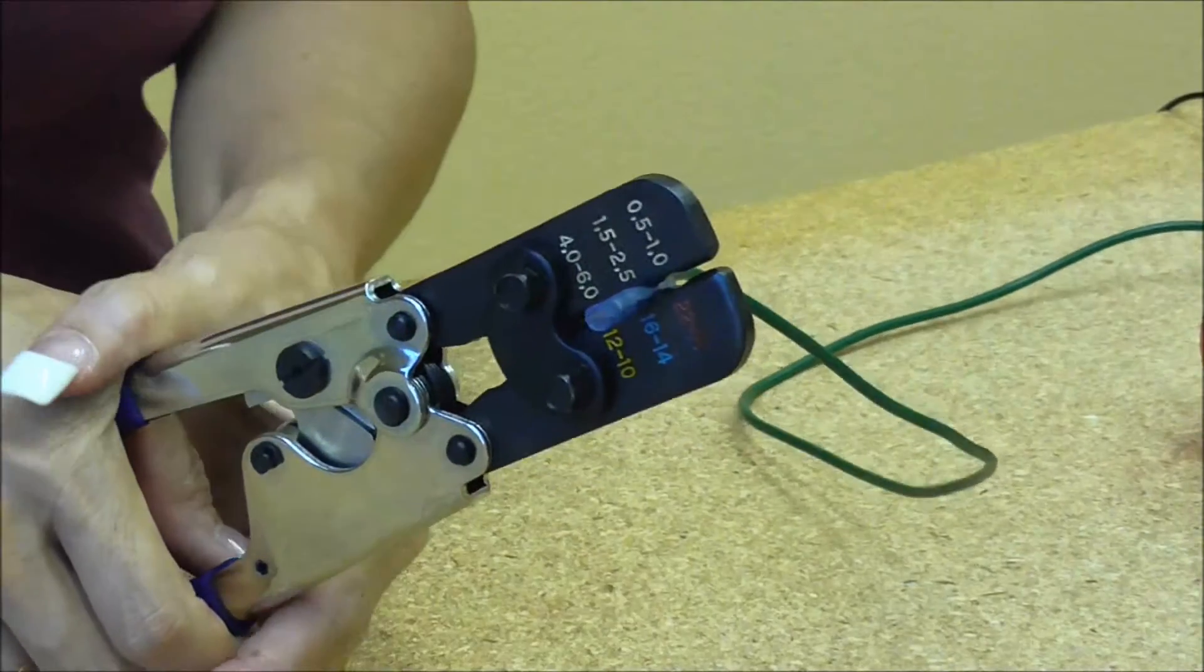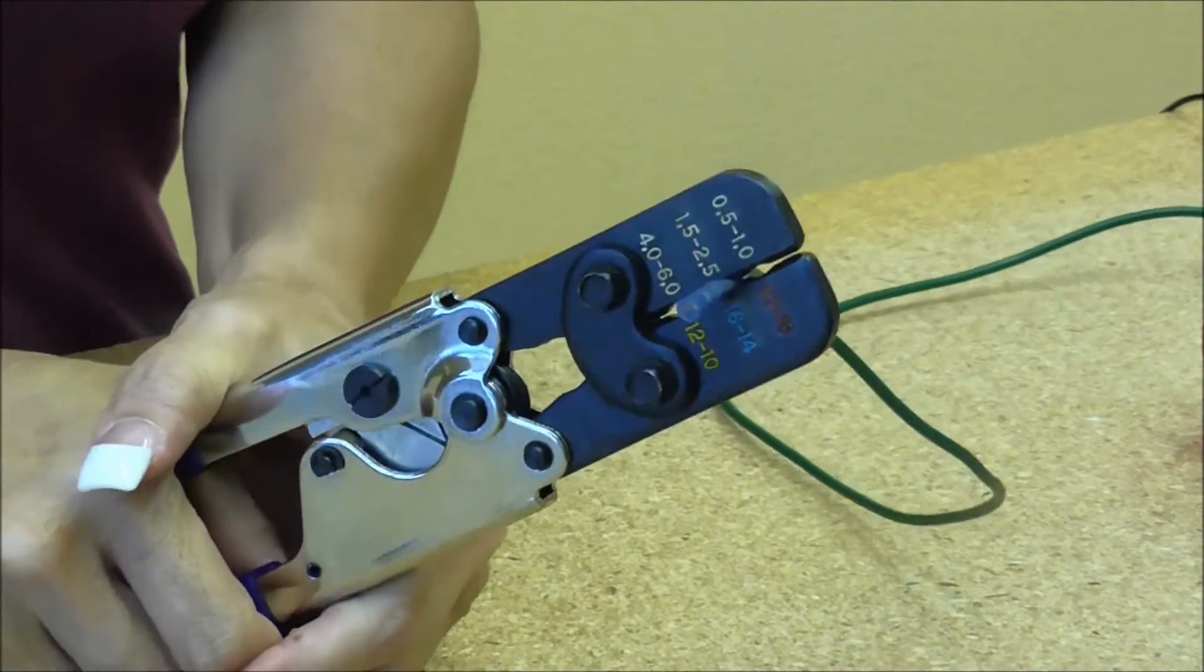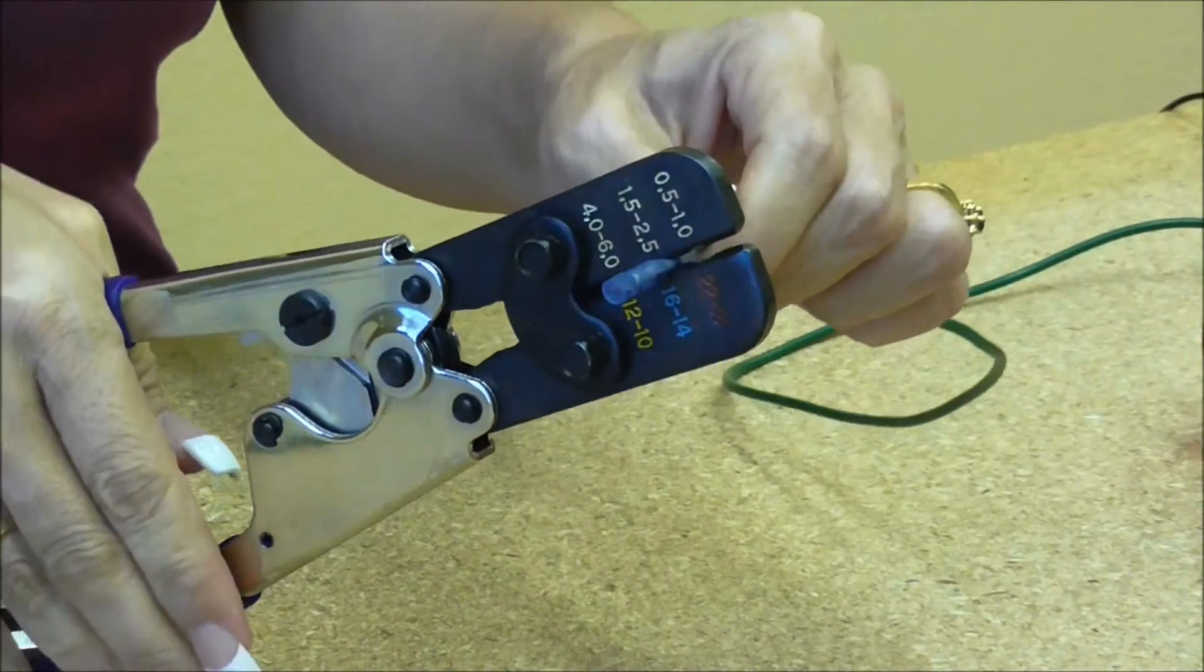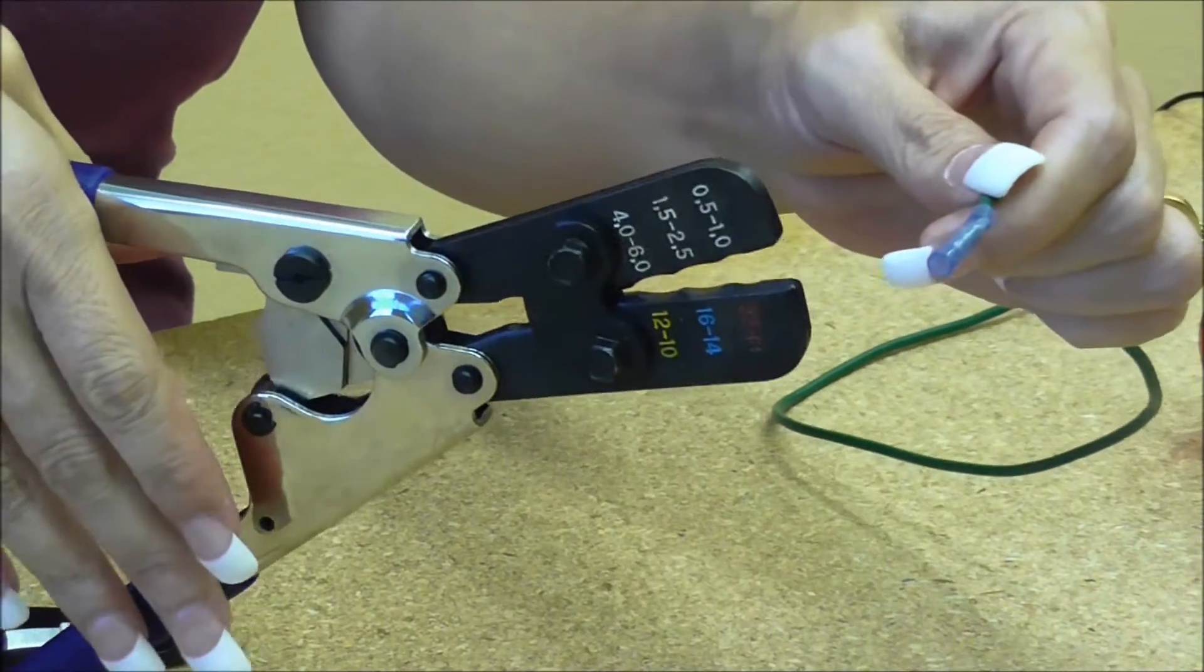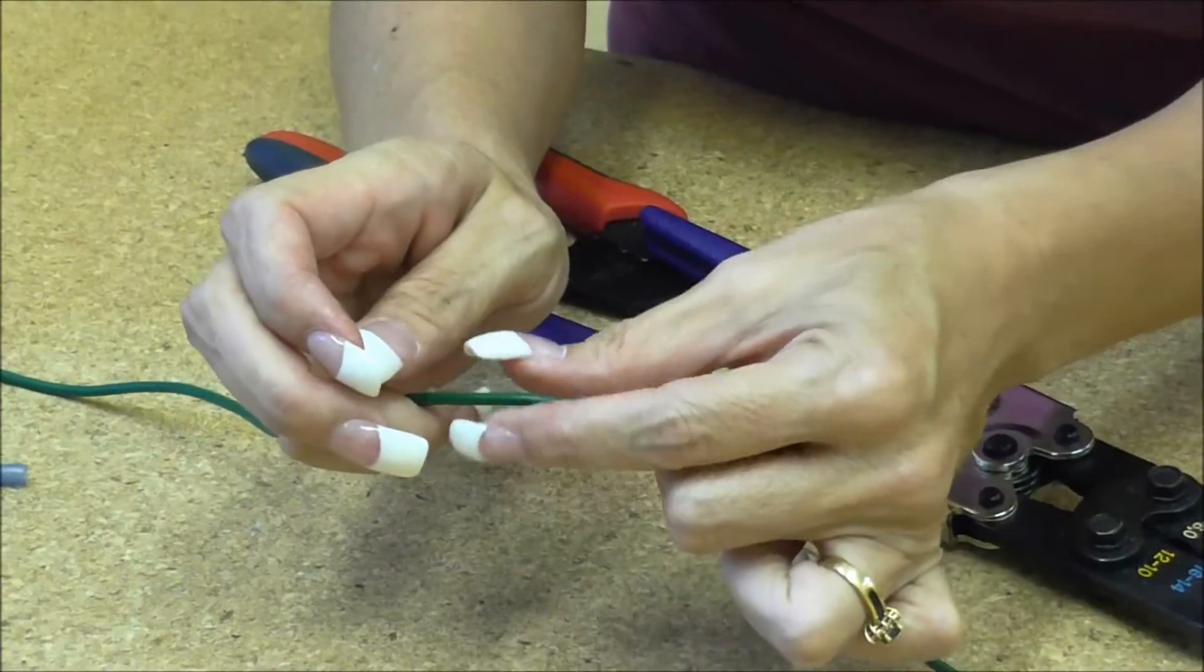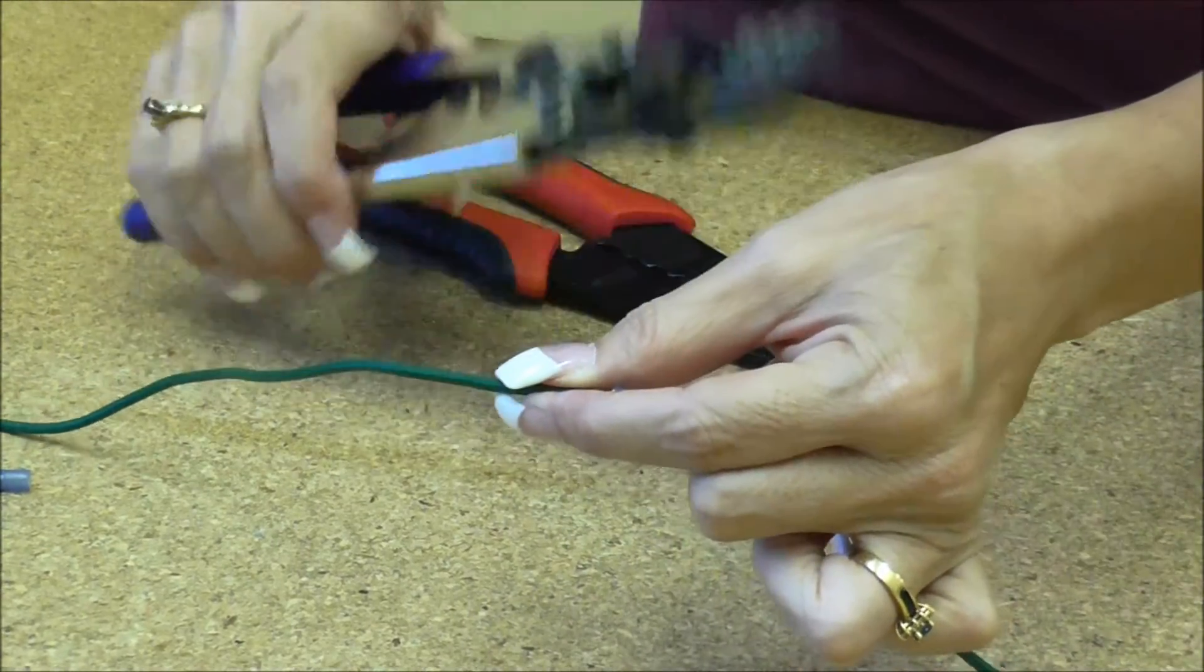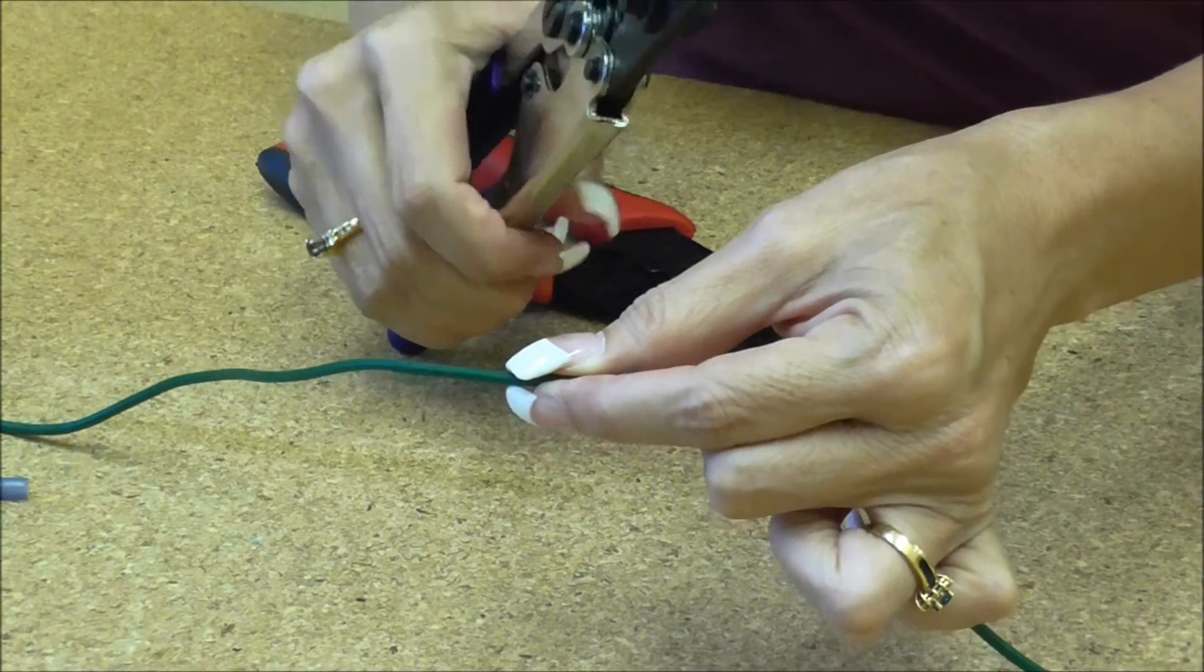Squeeze down until it finally clicks and then it releases itself. And then I'm going to grab this side, release my crimper, and then bring it down.